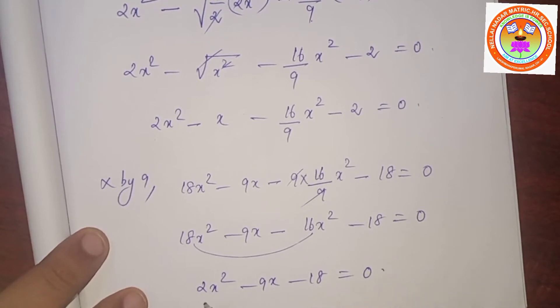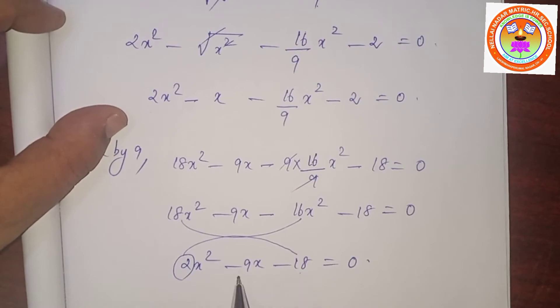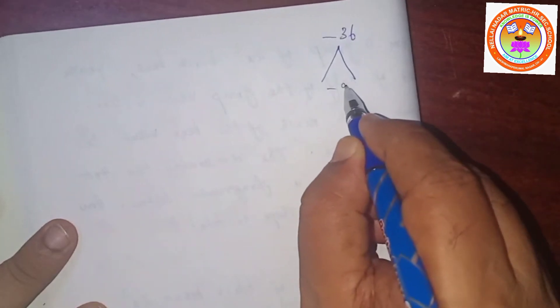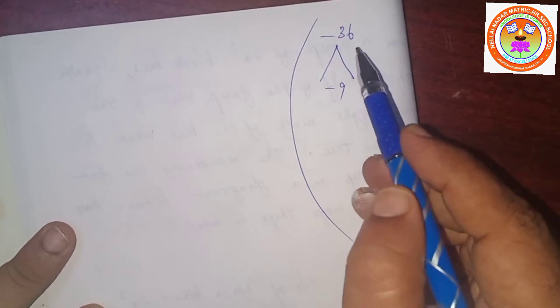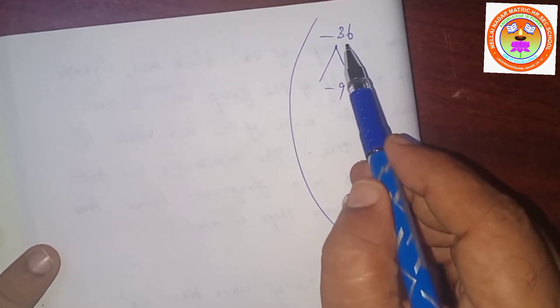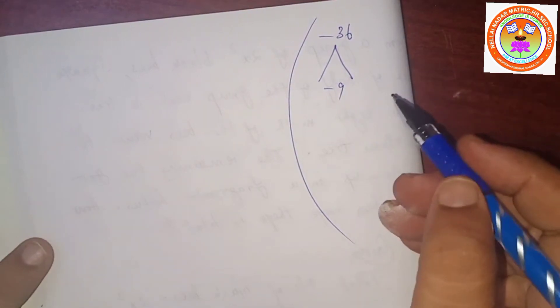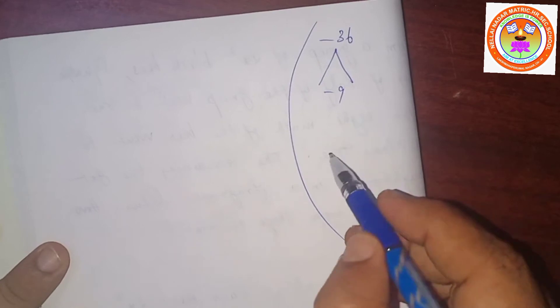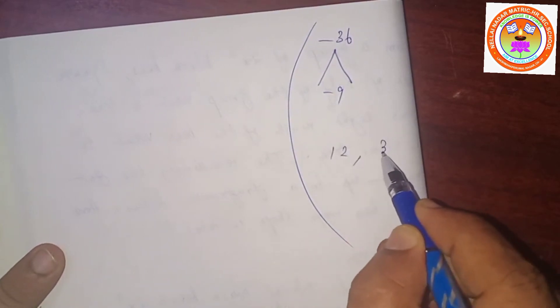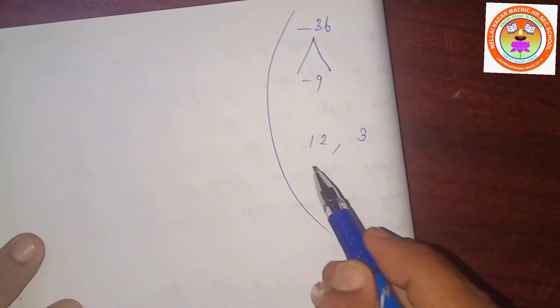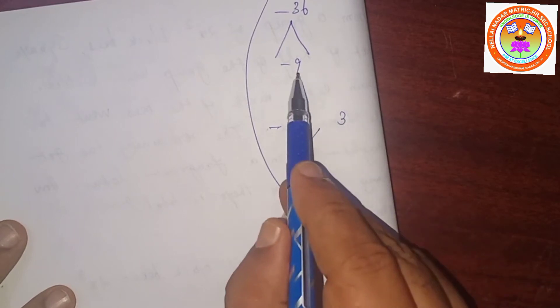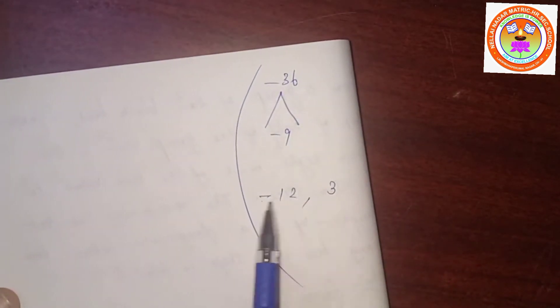We need two numbers with product minus 36 and sum minus 9. The combinations for 36 include: 36×1, 18×2, 12×3, 9×4. We need sum minus 9, so we take 12 and 3. Introducing minus for the bigger number: minus 12 plus 3 equals minus 9, and their product is minus 36.